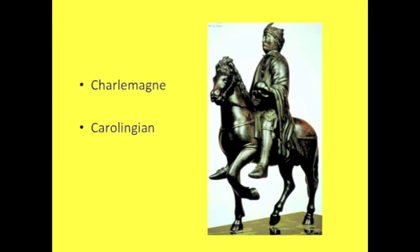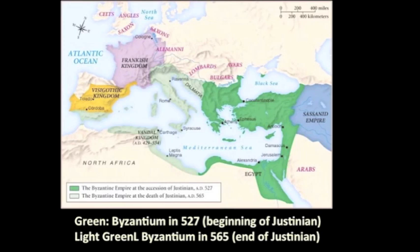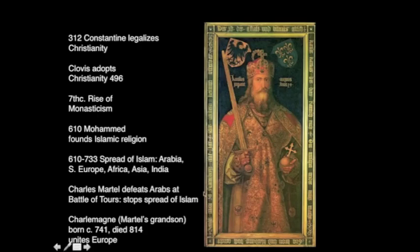Charlemagne was a very successful general, and in his combats he was able to unite vast swaths of Europe. You can see in green and light green the extent of the Byzantine Empire — what Justinian had coming in versus going out. But all around there are barbarian tribes: the Vandals in North Africa, the Franks in France, the Visigoths in Spain, the Ostrogoths in Italy. Charlemagne is successful in uniting together a lot of these lands, forming a strong centralized empire.